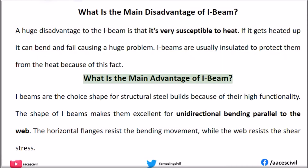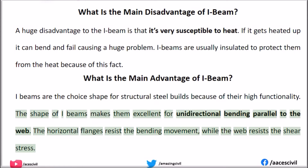What is the main advantage of I-beam? I-beams are the choice shape for structural steel builds because of their high functionality. The shape of I-beams makes them excellent for unidirectional bending parallel to the web. The horizontal flanges resist the bending moment, while the web resists the shear stress.